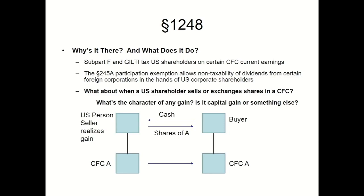Subpart F and GILTI tax U.S. shareholders on certain CFC current earnings. That's not entirely true because investments in U.S. property might not be from current earnings, but let's ignore that for the sake of discussion. Subpart F and GILTI focus on current earnings. The 245A participation exemption only comes into play when there is an actual dividend out of other earnings and profits. What about when a U.S. shareholder sells shares of a CFC? Does he earn capital gain from the sale of shares, or does he earn something else?